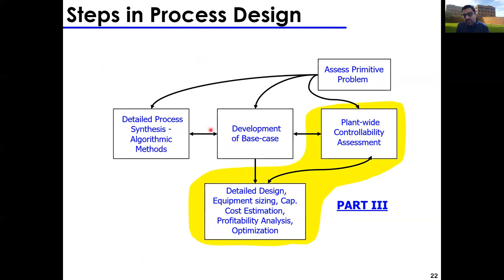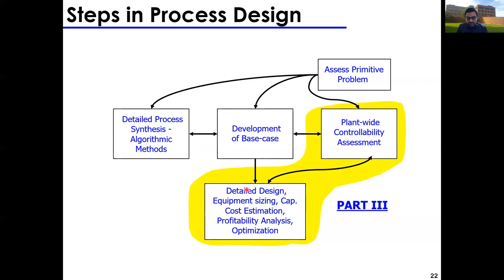One common issue: after developing a base case and P&ID and confirming it makes sense, you go to equipment sizing and find you need a reactor 100 meters in diameter — that's not feasible. You then iterate: maybe use two or three reactors. This doesn't necessarily change the base case topology, just the details of those steps. Chemical engineers must always be aware of two primary concerns: environmental issues and safety issues.